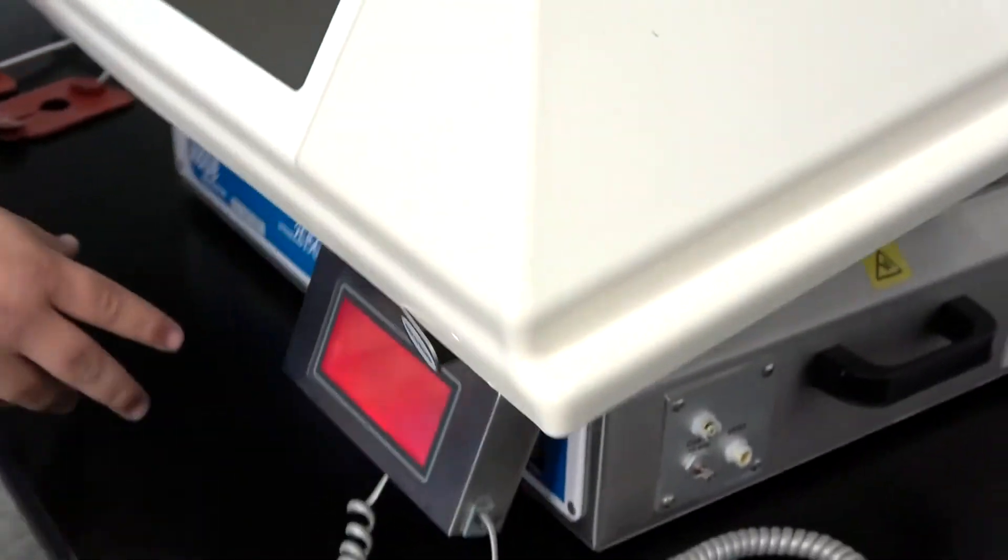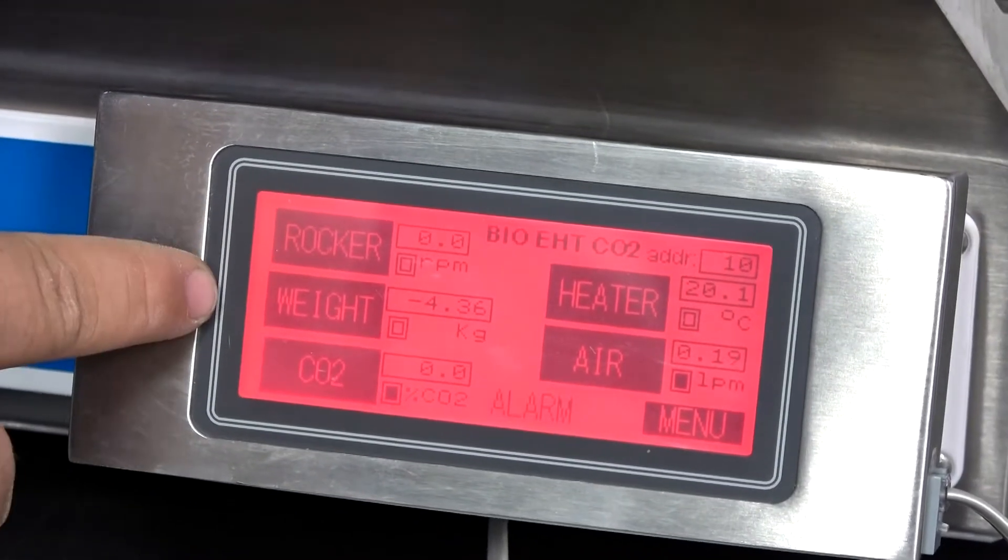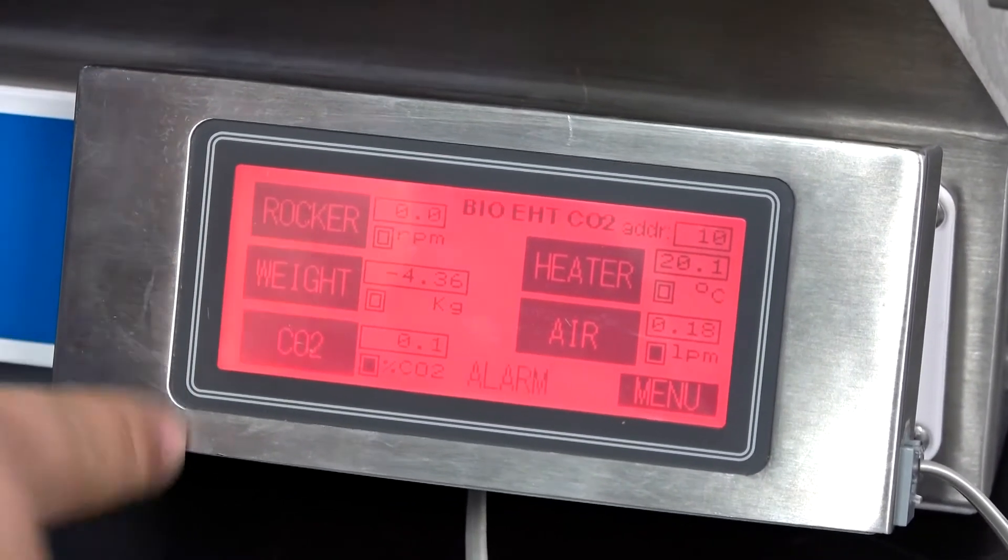When you first turn this instrument on, right here is your control panel. You have your rocker speed, height, your CO2 flow, your heater control, and your air flow control.